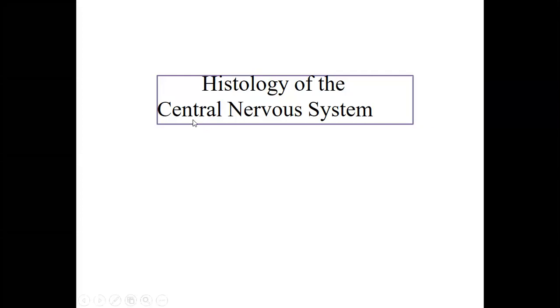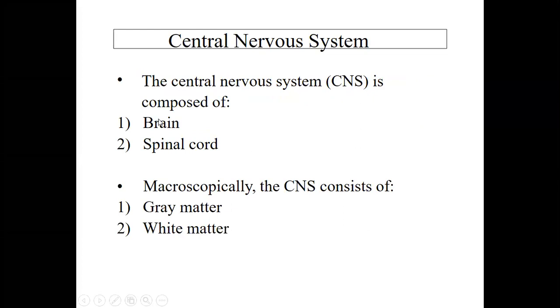Good morning. Today I'm going to present the histology of the central nervous system. Before going further, I'd like to introduce the components of the central nervous system. It is composed of the brain and the spinal cord. Microscopically, the central nervous system consists of two components: the gray matter and the white matter.